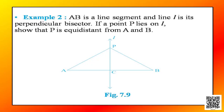Example 2 says that AB is a line segment and line L is its perpendicular bisector. If a point P lies on L, show that P is equidistant from A and B. So let us discuss the solution.